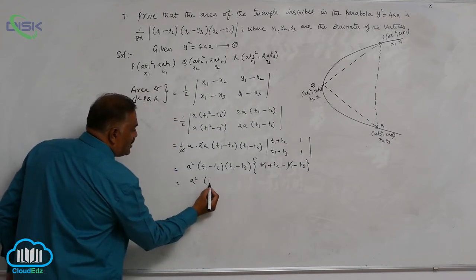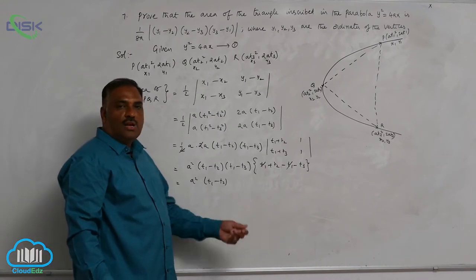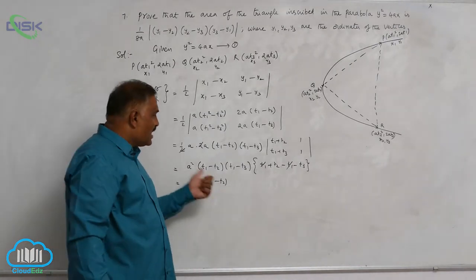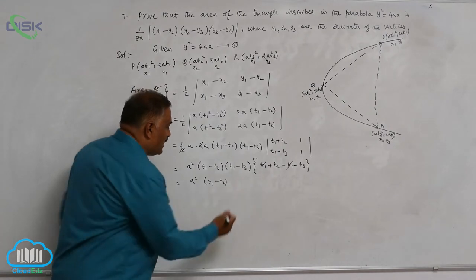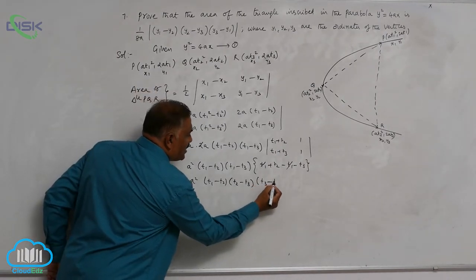It is a² into t₁ minus t₂. While writing this equation, to maintain the cyclic order, you can write like t₂ minus t₃ and t₃ minus t₁.